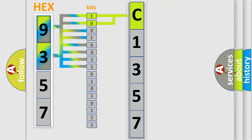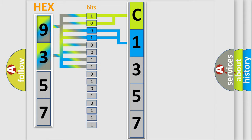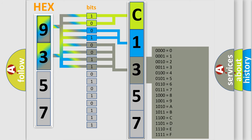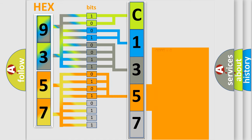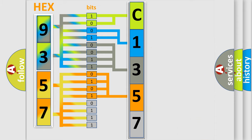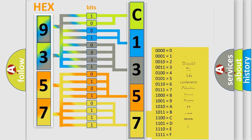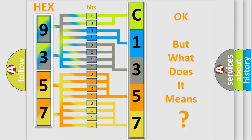By combining the first two bits, the basic character of the error code is expressed. The next two bits determine the second character. The last bits of the first byte define the third character of the code. The second byte is composed of eight bits: the first four bits determine the fourth character, and the last four bits define the fifth character. A single byte conceals 256 possible combinations. We now know how the diagnostic tool translates received information into a more comprehensible format.